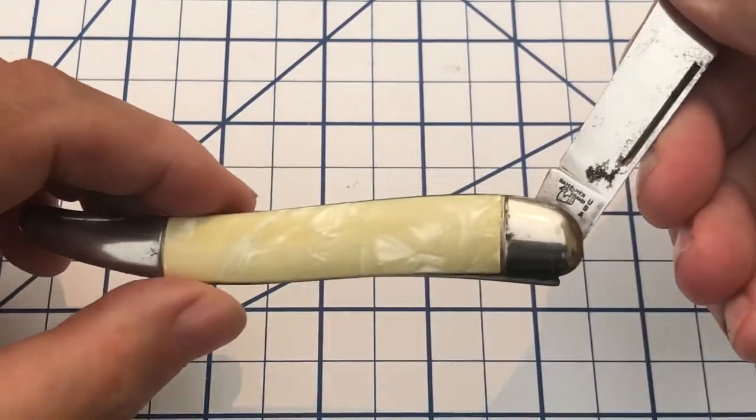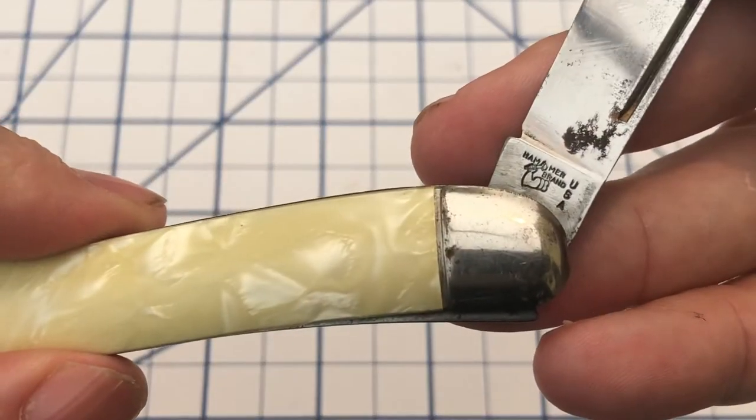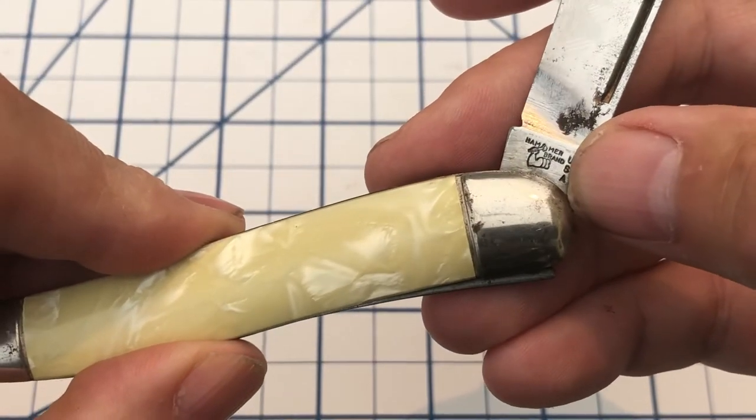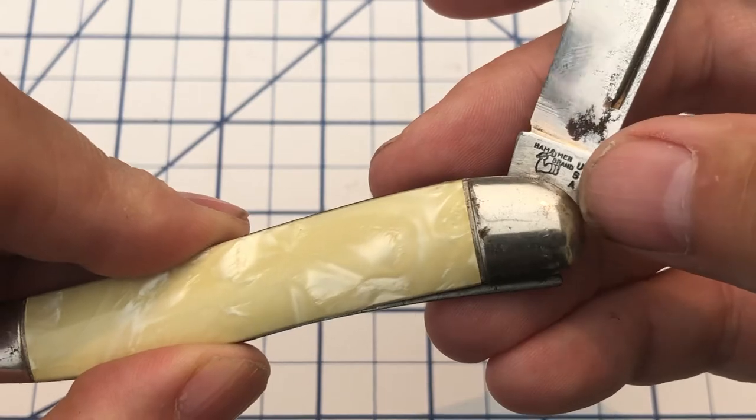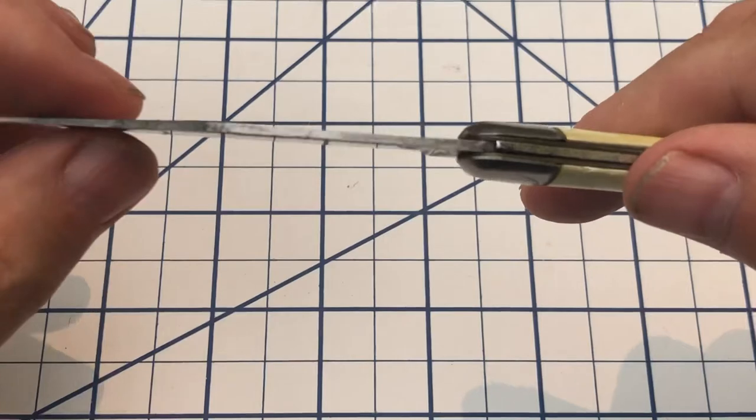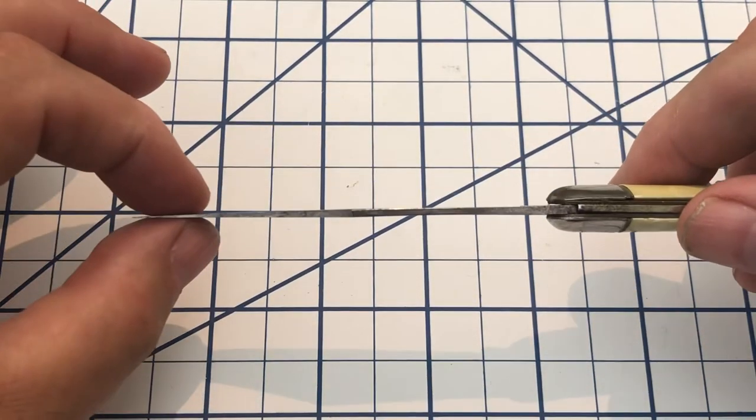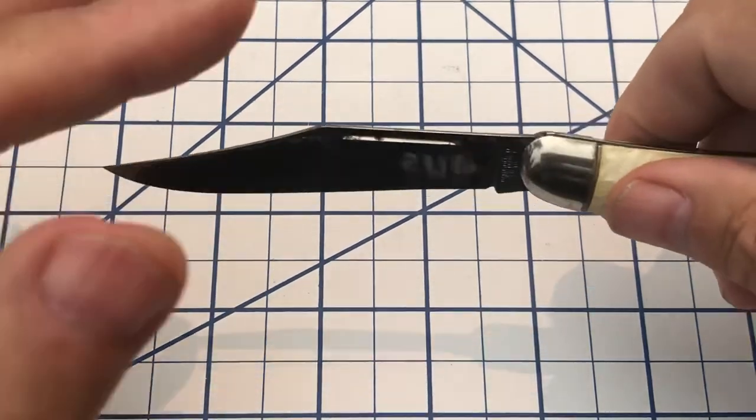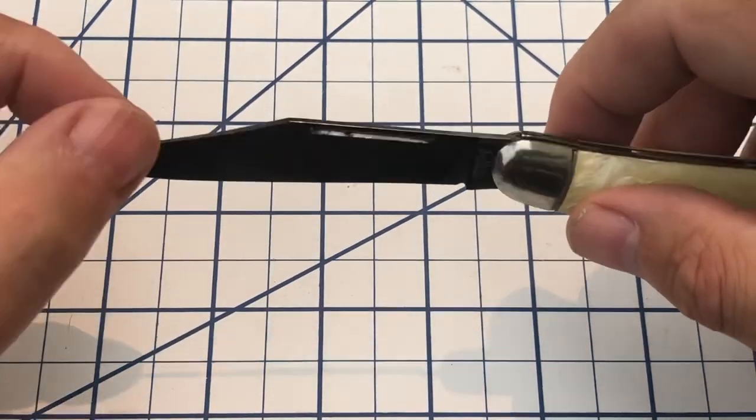But as you can see, it does have the Hammerbrand Tang Stamp on here. If it does not have the USA, it was pre-World War I. The USA came on in 1942. Nothing on the other side. This is a very thin blade, as you can see. And it does have a little bit of blade play, which is not uncommon with these shell-handled knives.